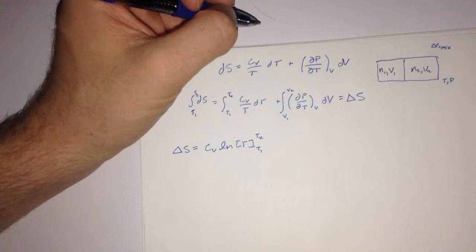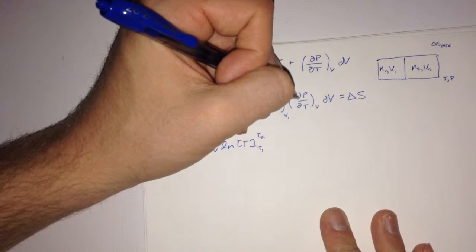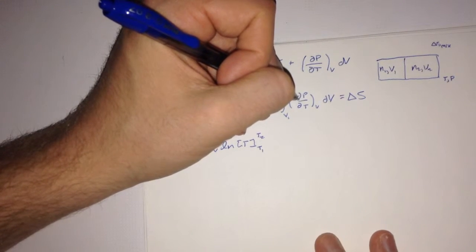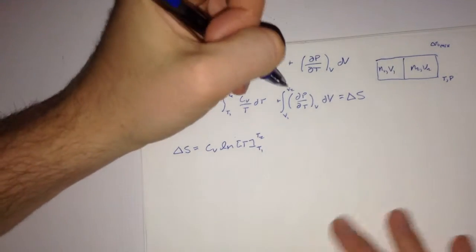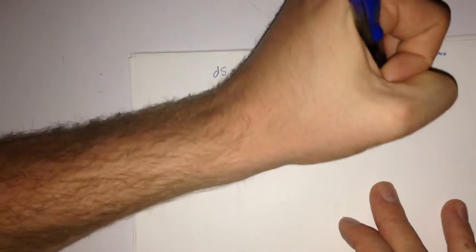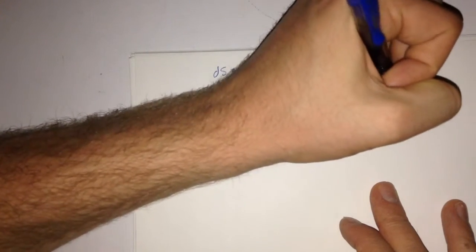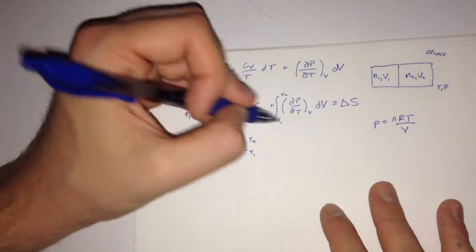We'll move on to the next part of the equation. We notice that we need to take the partial of dp dt first in order to solve this. We also know that p to the ideal gas law is equal to nRT over v. And so we might as well substitute that in to the equation.